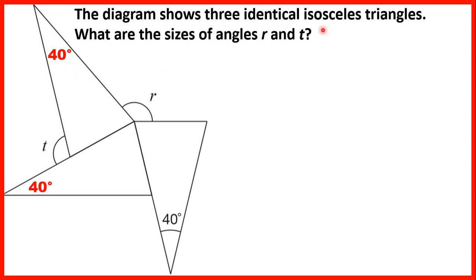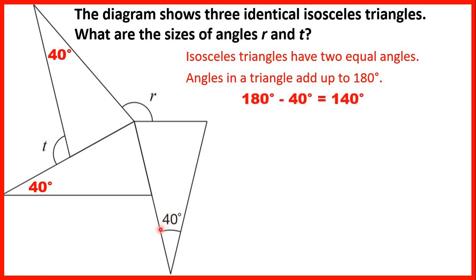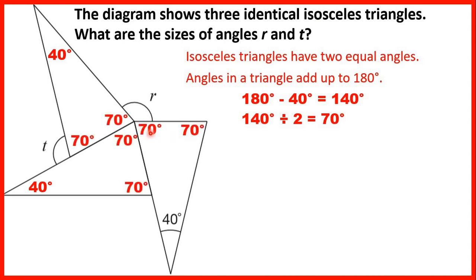We're also told that the triangles are isosceles, and isosceles triangles have two equal angles. Angles in a triangle add up to 180 degrees. So if one angle is 40, we subtract that from 180 to get 140. Because the triangles are isosceles, the other two angles are equal, so we divide 140 by 2, giving us 70 degrees for each of those angles.